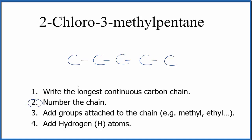Then, we'll number the chain. So, let's go 1, 2, and we're going from left to right. We number the chain, and now we're going to add the groups that are attached to the chain. We can see that on the second carbon here, we have the chloro group. So, we're just going to stick a chlorine on the second carbon here, Cl.